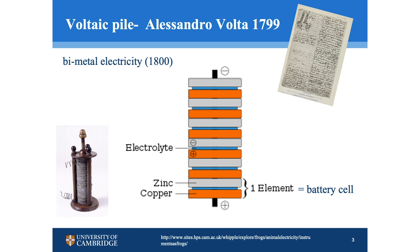What Volta discovered is that each pair of electrodes like this makes an element or a battery cell. When he piles them all one on top of each other he could add up the voltage of each cell and get a higher voltage of the combined battery. An example of such batteries can be found in the Whipple Museum and it is called Voltaic Pile.